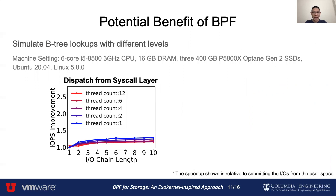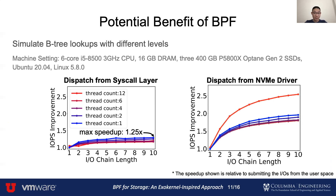The x-axis is the length of the IO chain, and the y-axis is the speedup we get by dispatching the next request within the kernel. We use a memcpy in the BPF function to simulate B-tree node parsing. We see that we can achieve 1.25x speedup when the B-tree depth is deep enough. We also run the experiment in which we dispatch the new request within the NVMe driver. Unsurprisingly, we can achieve larger speedup compared to dispatching from the syscall layer. The speedup is more significant when the number of threads exceeds the number of CPU cores, because the baseline is bottlenecked on CPU while we can reduce the CPU overhead.